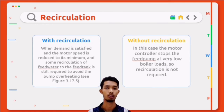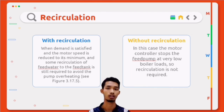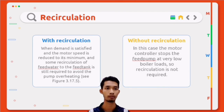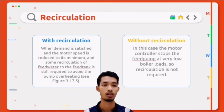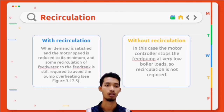There are two ways that variable speed drive technology is generally applied. With recirculation: when demand is satisfied and the motor speed is reduced to its minimum, some recirculation of feed water to the feed tank is still required to avoid the pump overheating. Without recirculation: the motor controller stops the feed pump at a very low boiler load, so recirculation is not required.